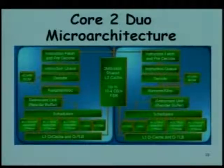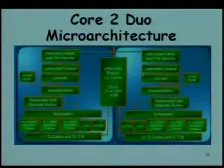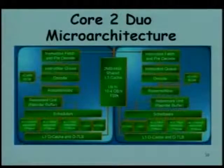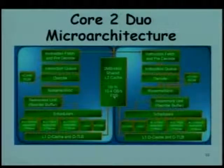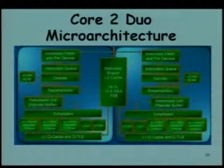We have some discussion coming about the back-side bus and front-side bus in the Intel architecture. There is a shared bus and a 10.4 GB/s FSB connected to the L2 cache. The FSB is an inherent component to all Intel architectures, in contrast to the AMD architecture. We will see why FSB is a critical parameter in processor performance.